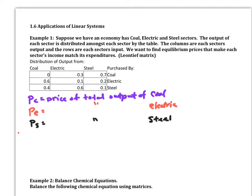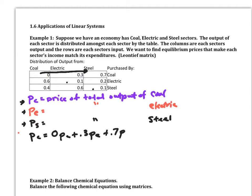So how we're going to use a matrix for this — we need some variables. p sub c is the price of total output of coal, p sub e is the price of total output of electric, and p sub s is the price of total output of steel. Note that electric to electric is 0.1, meaning the electric company is using part of their own electricity internally, and similarly steel to steel. The price of coal equals 0·p_c + 0.3·p_e + 0.7·p_s, which is the overall price for coal.